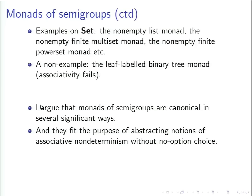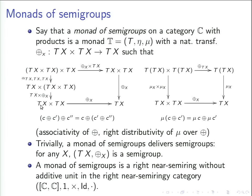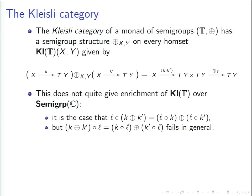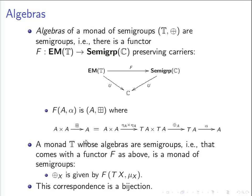In response to a question: the second equation — the distributivity law — comes from the fact that not only are all algebras semigroups, but this assignment really is a functor, so it comes from the functoriality of that functor.